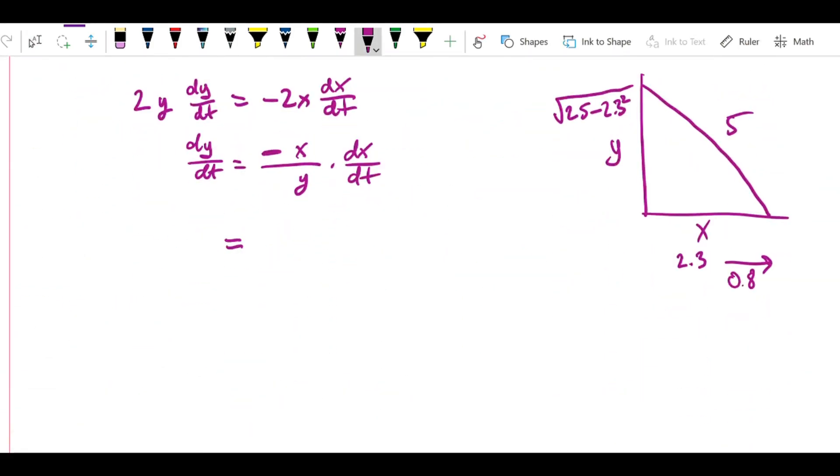We're going to just plug in the values. This is going to be negative 2.3 over the square root of 25 minus 2.3 squared times 0.8. This comes out to negative 2.3 over approximately 4.44 times 0.8. If I've done everything right, I forgot the negative sign - there was a negative in front of the x.